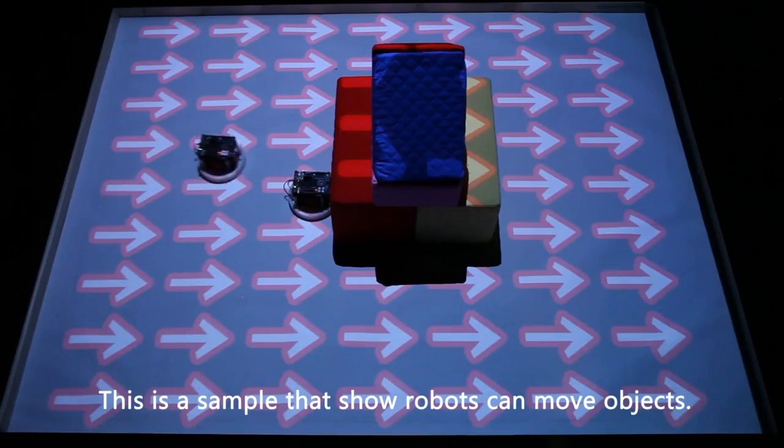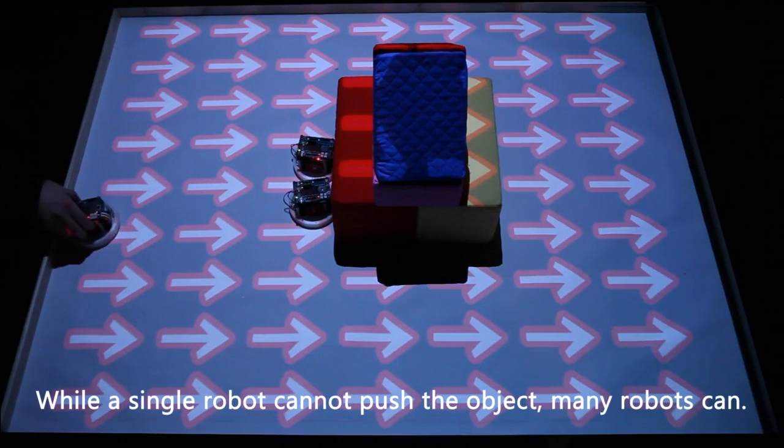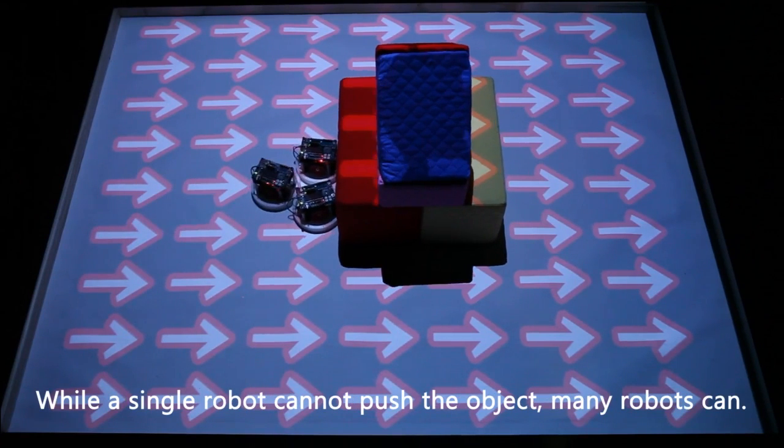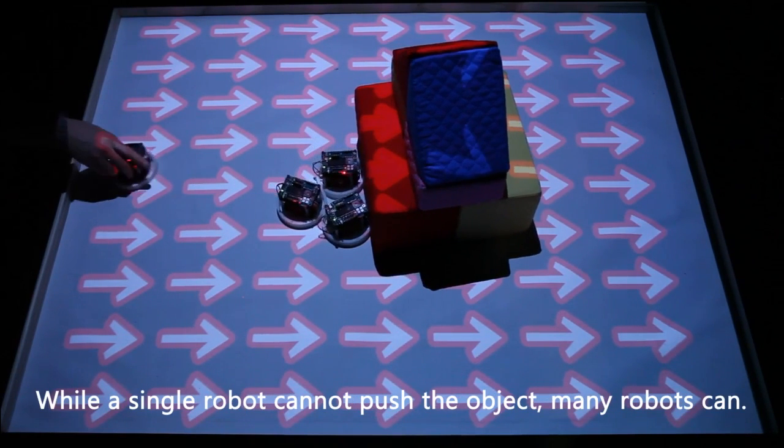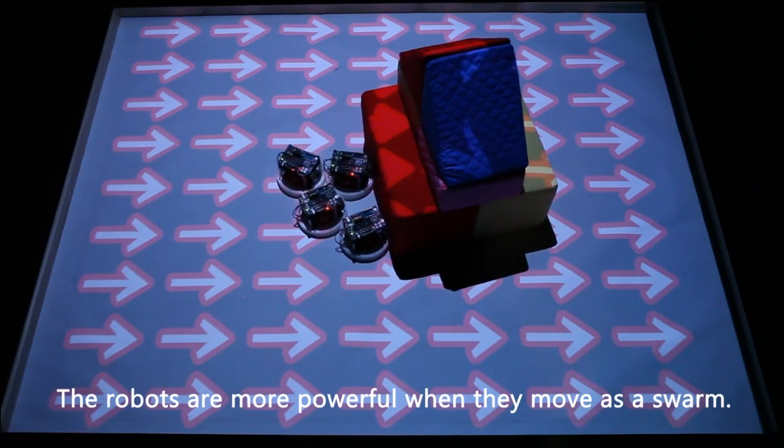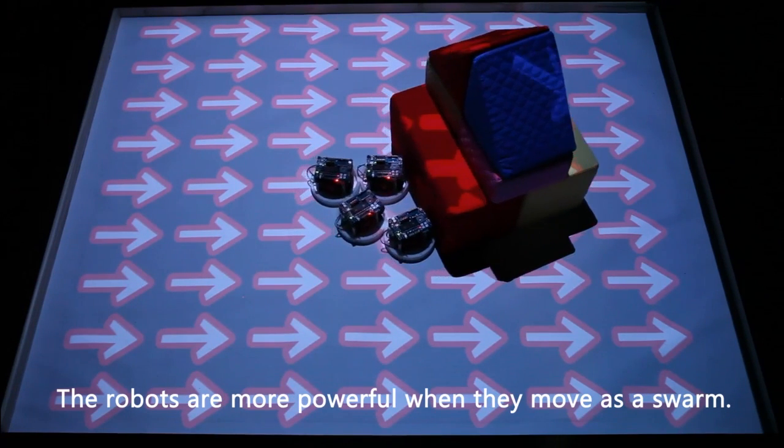This is a sample that shows robots can move objects. While a single robot cannot push the object, many robots can. The robots are more powerful when they move as a swarm.